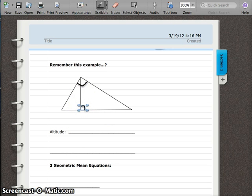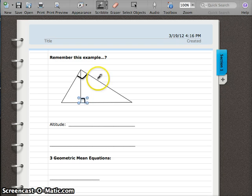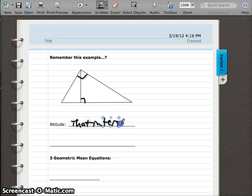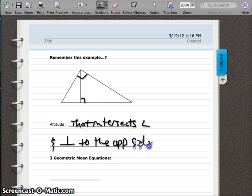You can always draw an altitude in any triangle. An altitude is a segment that intersects an angle like it does up here, intersects an angle, and is perpendicular. So it's perpendicular down here to the opposite side. That's called an altitude. If you can draw one or locate it in examples here, it'll help us solve some missing areas of this triangle, missing segments.